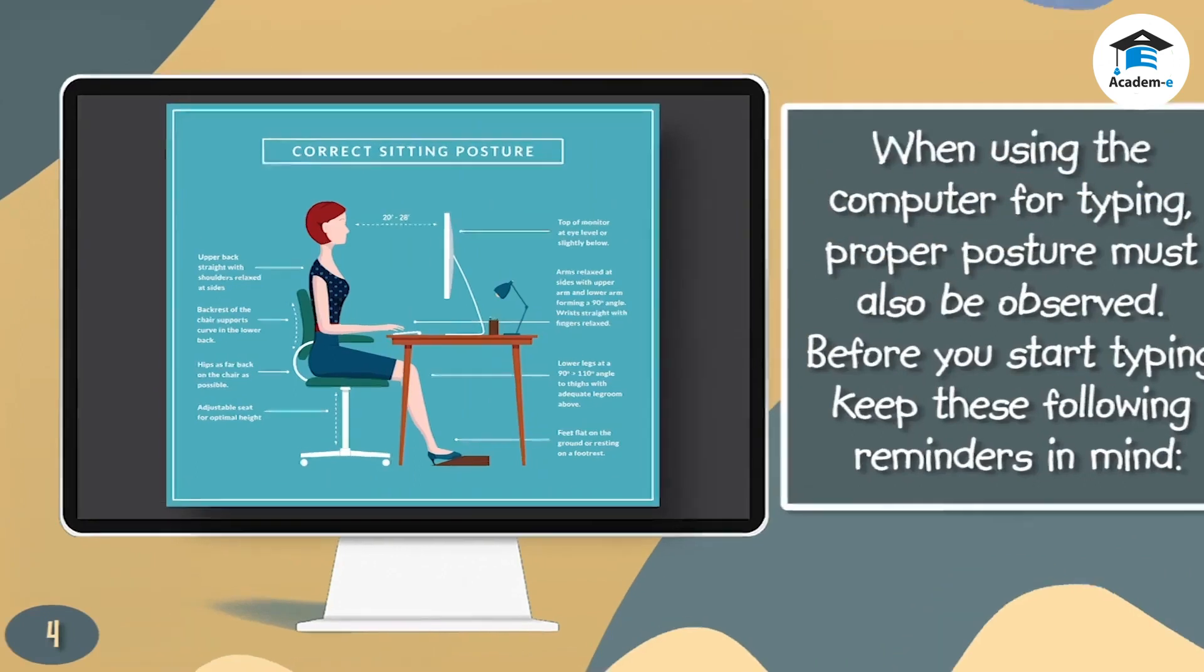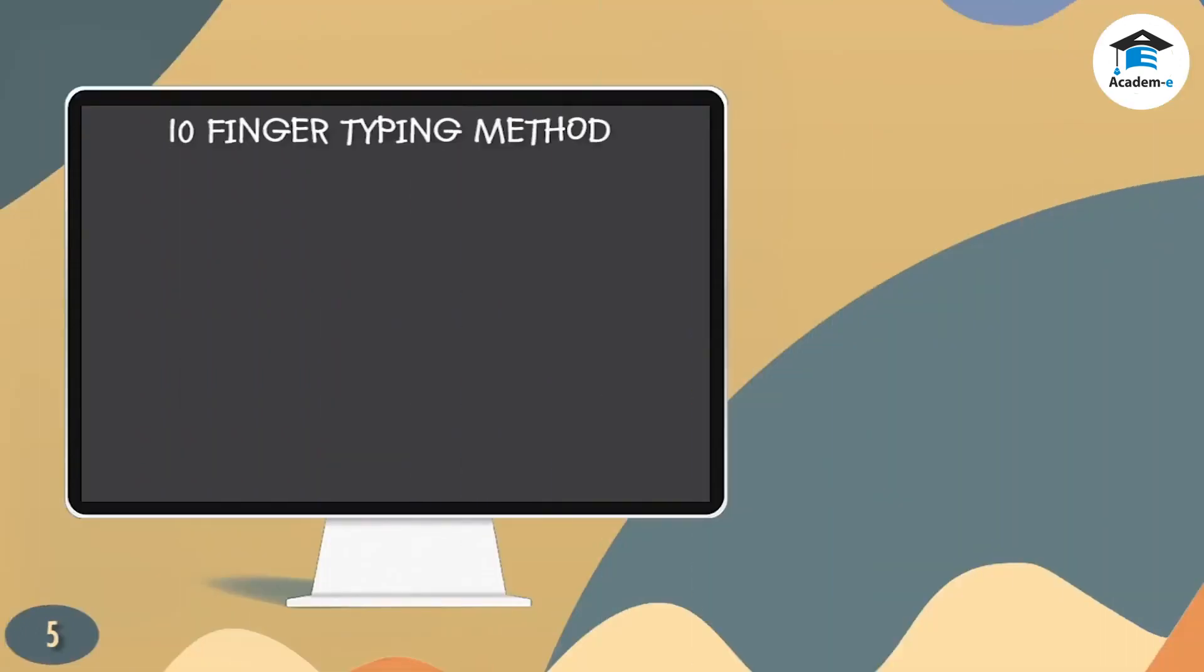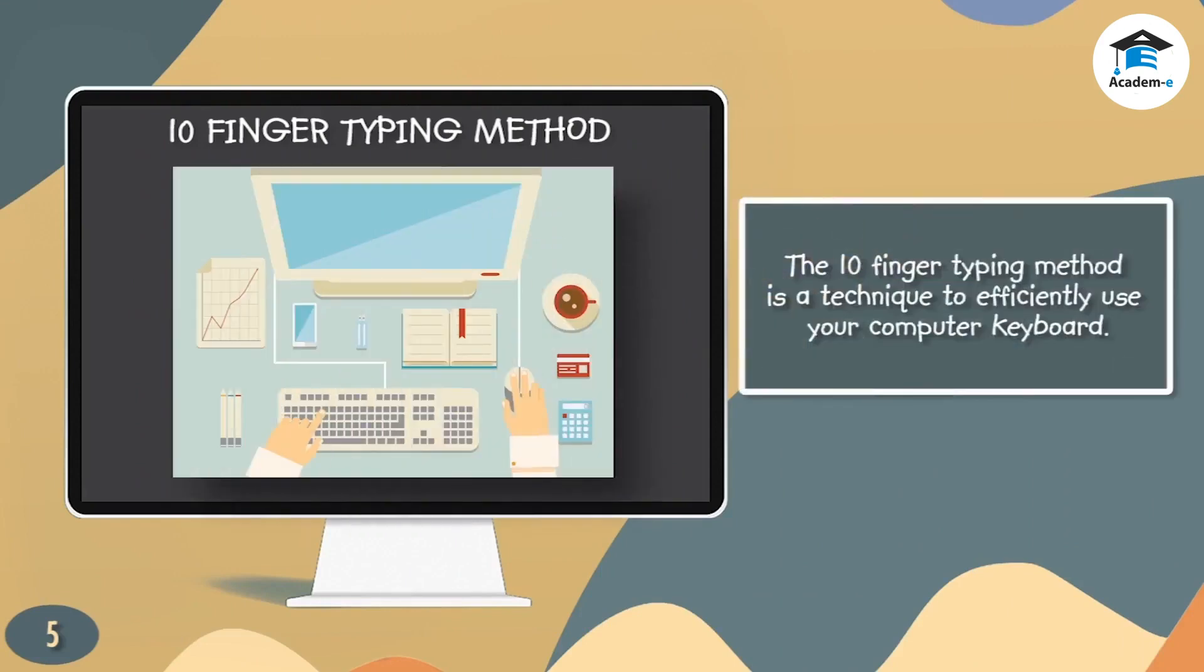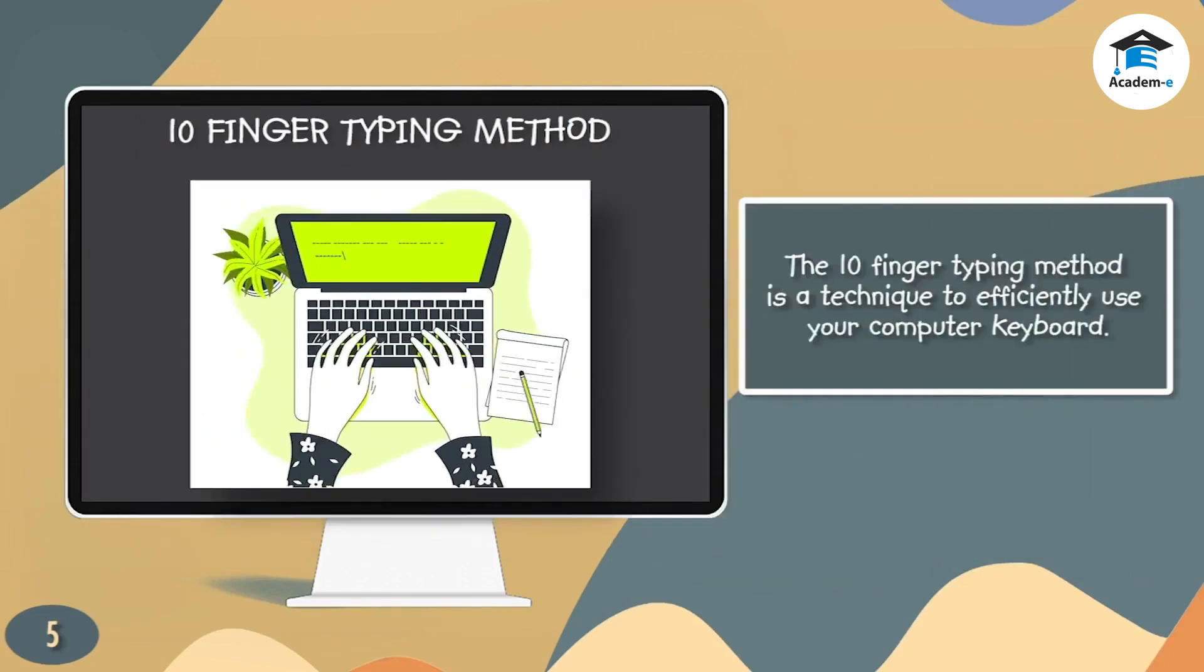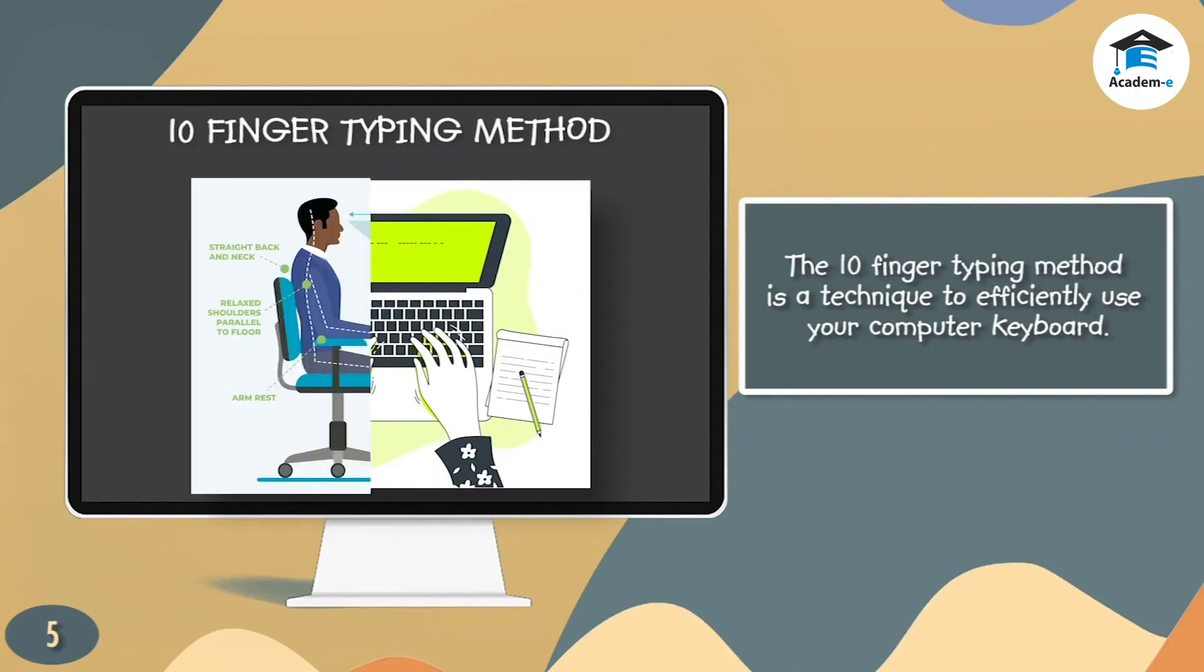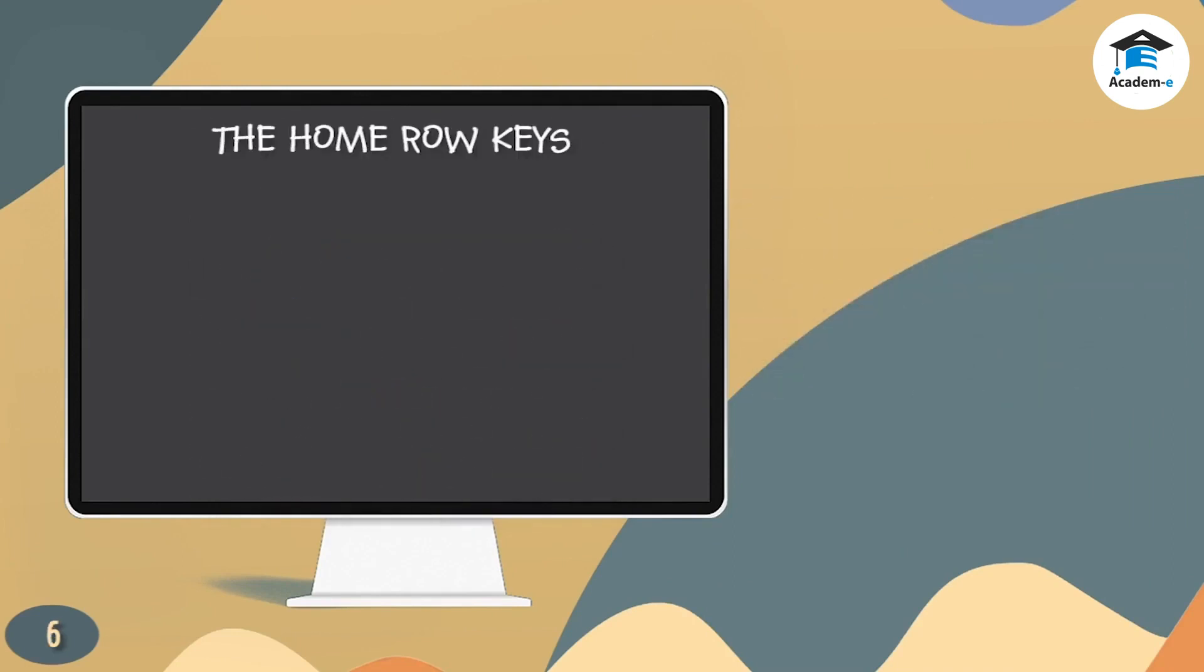10 finger typing method: The 10 finger typing method is a technique to efficiently use your computer keyboard. With some practice and correct finger positions, you can type without even looking at the keyboard. With this method, you can significantly lower your error rate and increase your typing speed at the same time.